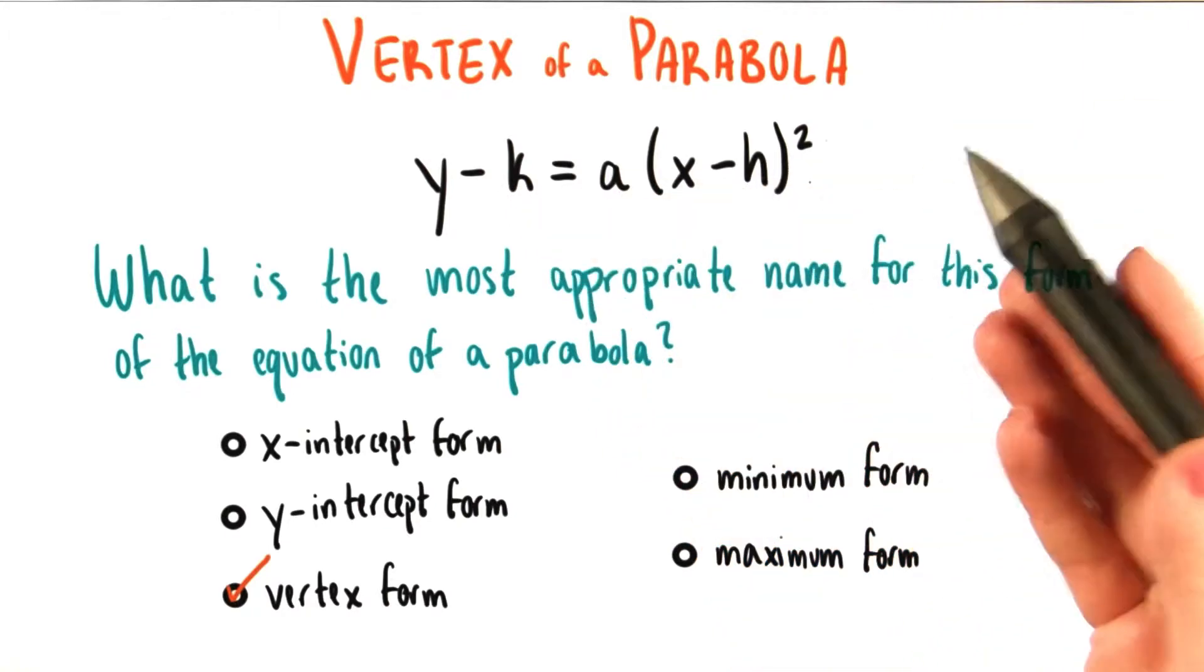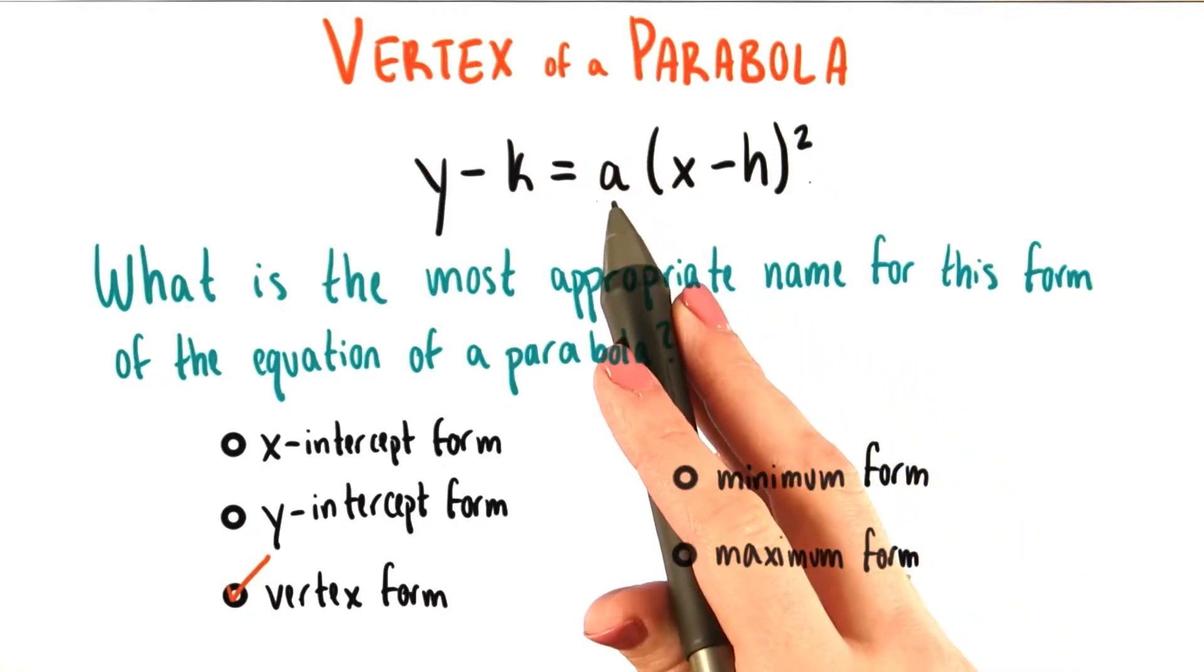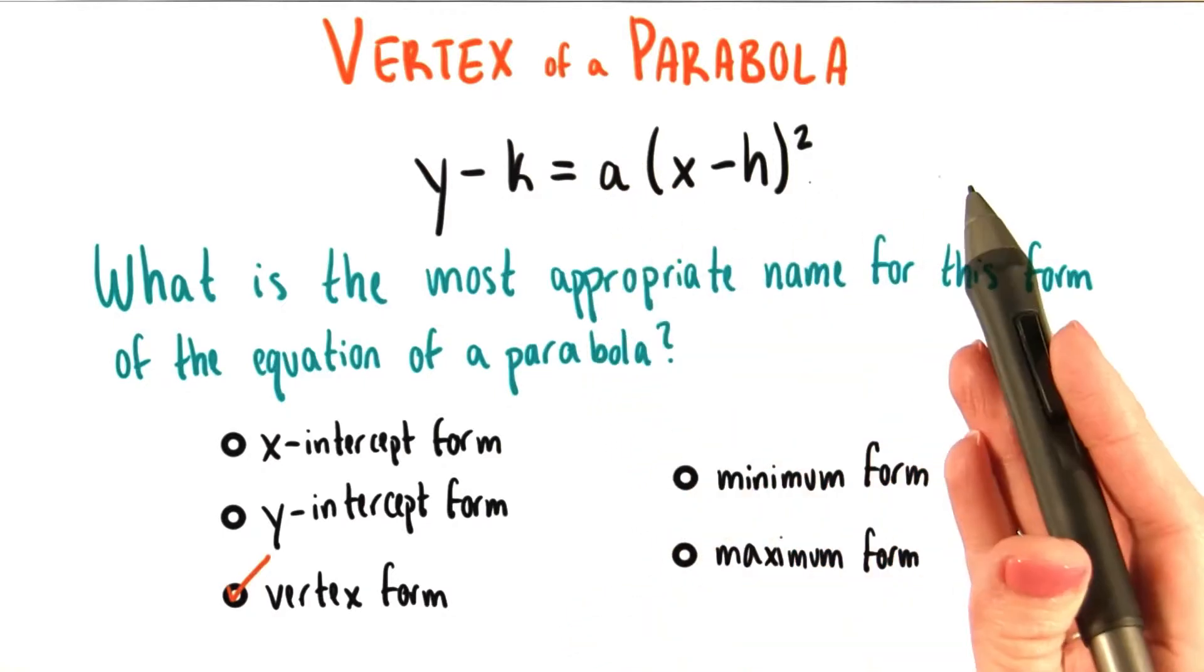That's why this form is so useful, and also because we can see from the coefficient a about how wide the graph is going to be.